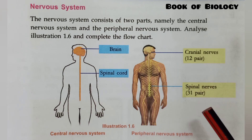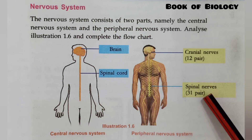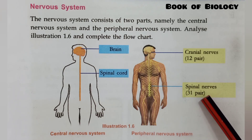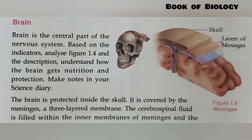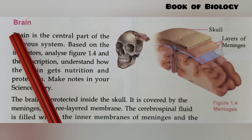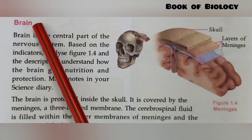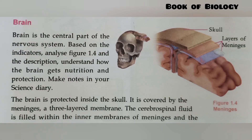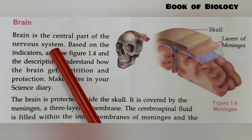There are 12 pairs of cranial nerves and 31 pairs of spinal nerves. Next, we will study about the brain. The brain is the central part of the nervous system, so it should be highly protected.